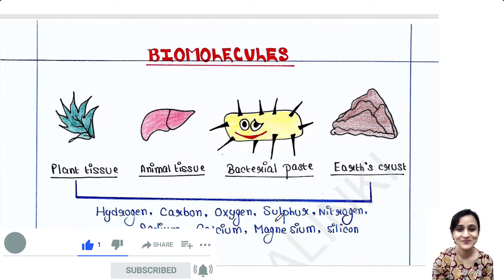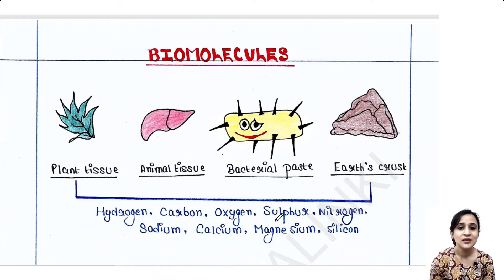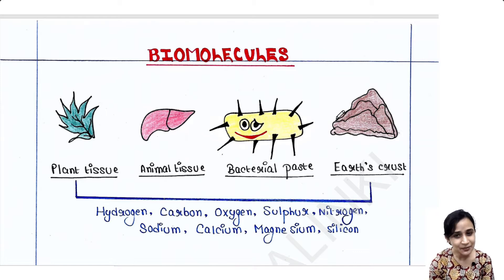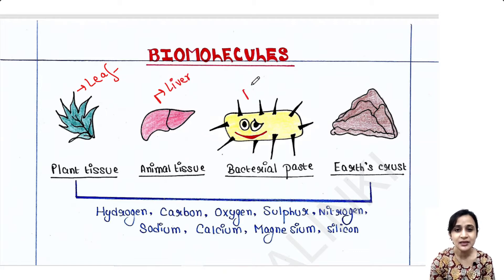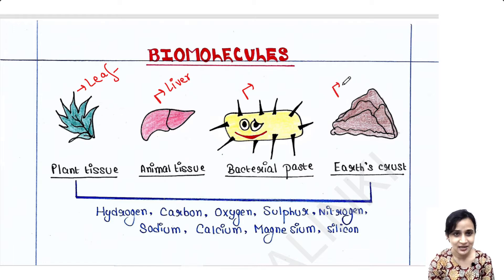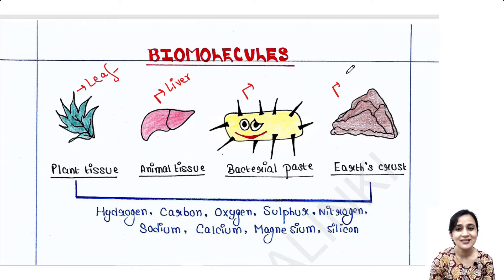Suppose you take plant tissue, animal tissue, bacterial paste, or earth's crust — like you take a leaf from a plant, or a liver from an animal, you take some bacteria and make their paste, or you can take soil. If you take these samples and analyze them, what is their chemical composition?